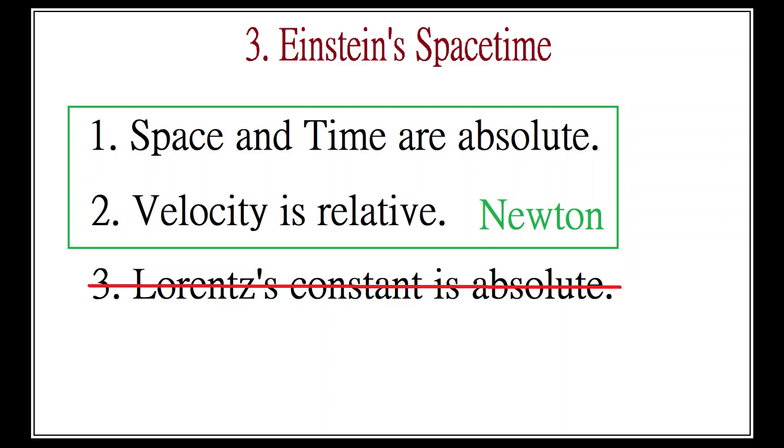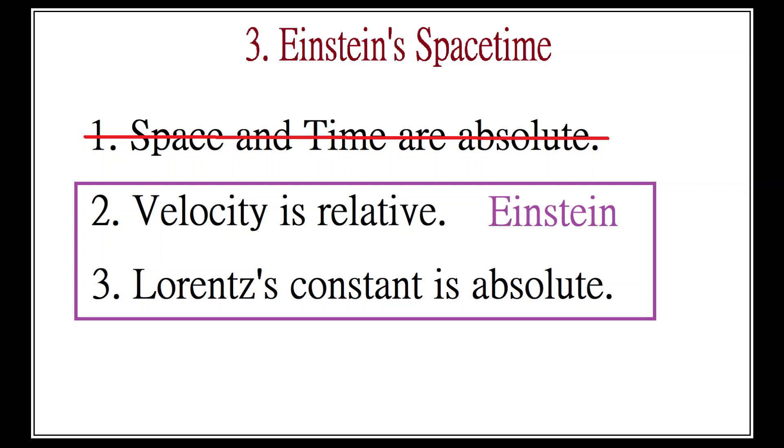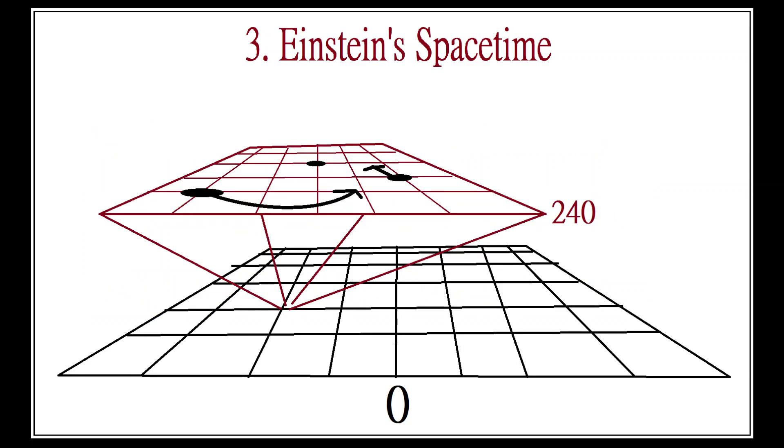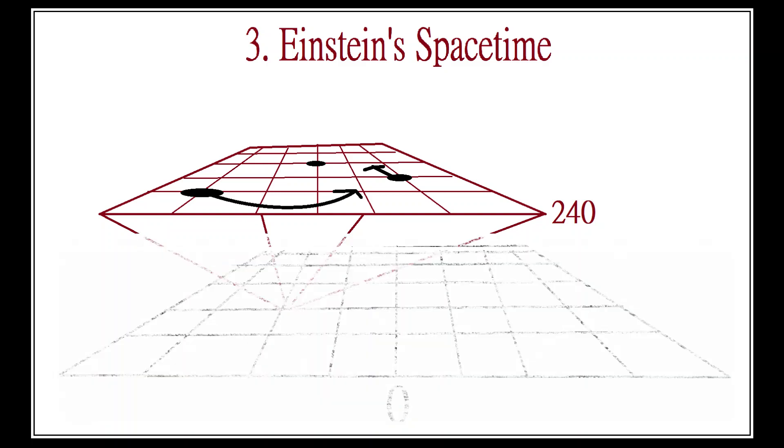But Albert Einstein, in his theories of relativity, made the bold move to reject concept 1. For Einstein, there is no absolute impersonal reference grid for space and time. Space and time are not independent of the observer.